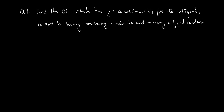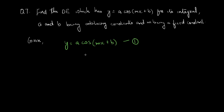m is a fixed constant, so if the differential equation has m in it, that is okay. Given: y = a·cos(mx + b) — this is equation one. Differentiating with respect to x.